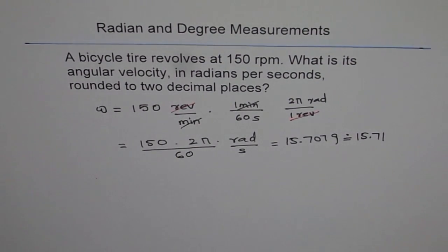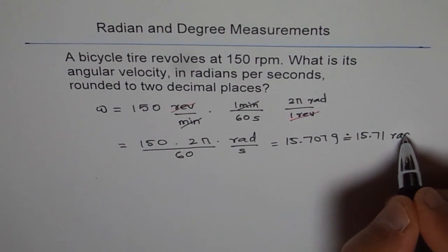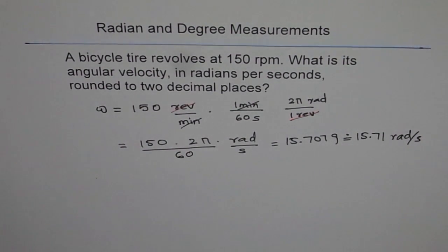And what is our units? Radians per second. Okay. So that is how we convert our units from revolutions per minute to radians per second.